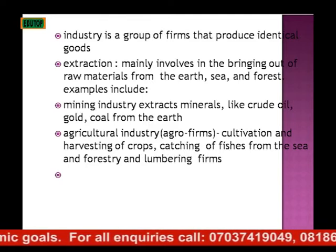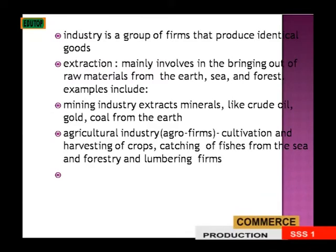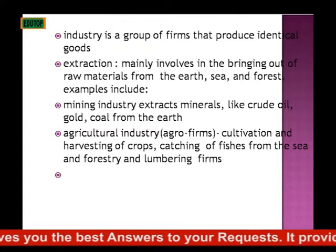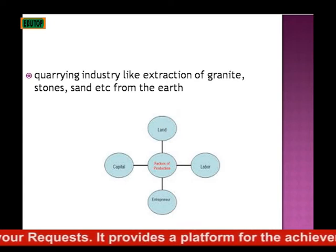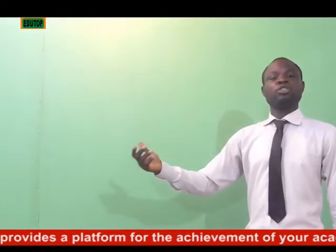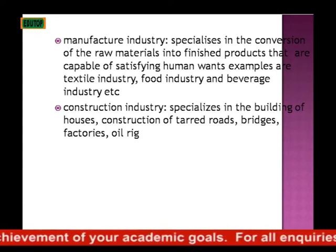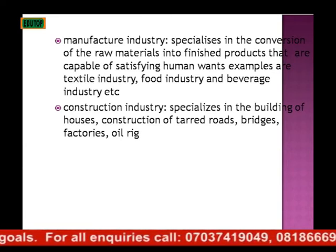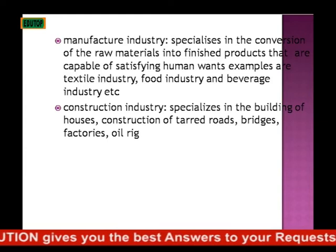We also have agricultural industry — these are called agro-firms. They involve cultivation and harvesting of crops, catching of fish from the sea, and forestry and lumbering firms. We have quarrying industry, like extraction of granite, stones, sand, etc. And we have construction industry, which specializes in the building of houses, construction of tarred roads, bridges, etc.